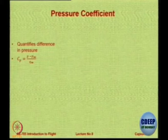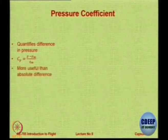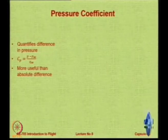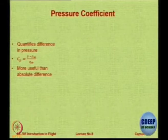Pressure coefficient Cp quantifies the difference in pressure. It is the local pressure at any point in the flow field minus the free-stream pressure P∞, divided by Q∞, the dynamic pressure half rho V∞². This value Cp is more useful than the absolute pressure difference. Take any part of the body — above and below there is a pressure difference — multiply by the local area and you get the net force. The value of Cp at any point is what matters most.